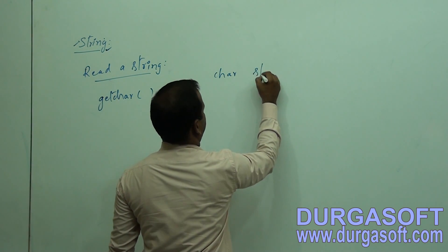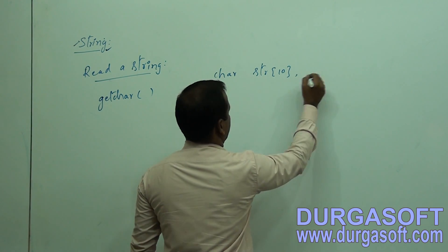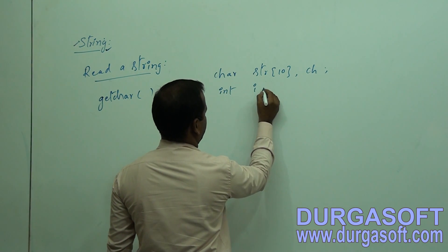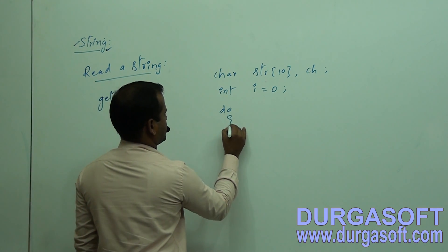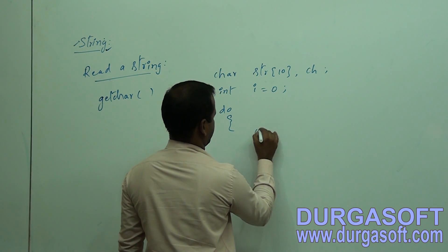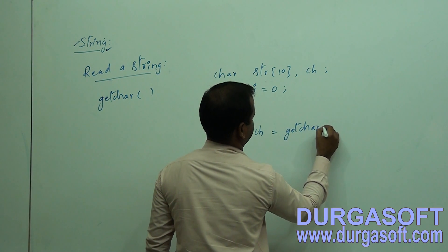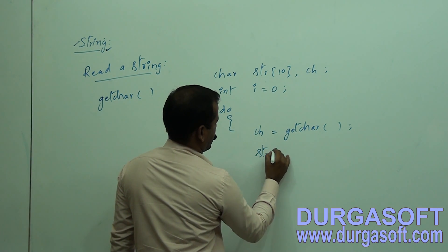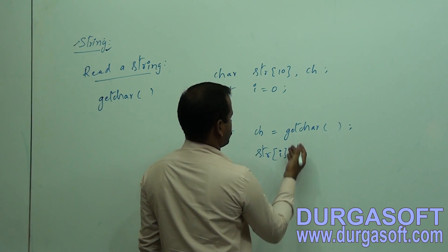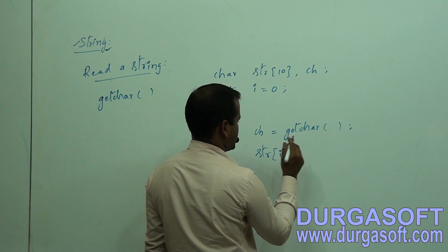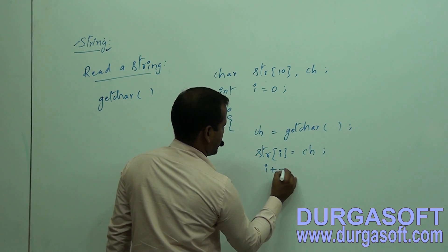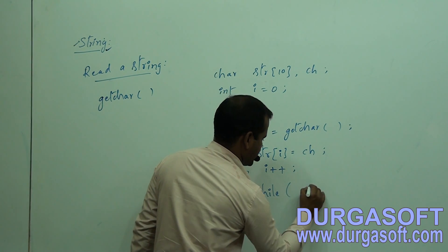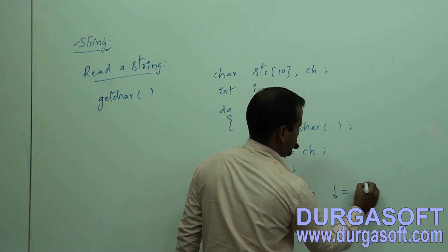Let us assume that a string is declared with length 10, one single character type variable ch, and one integer type variable i. Let us initialize i with 0. In the do part, ch is equal to getchar() to read a single character into the character type variable, and then we store this character value into string[i], then increment i. This is the do-while segment, and the condition is that character ch is not equal to a newline.